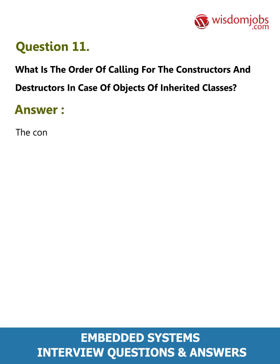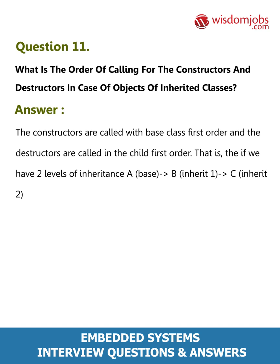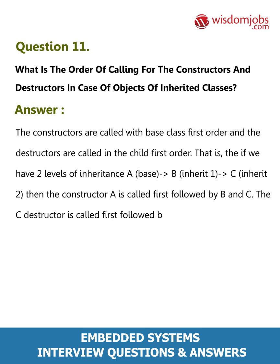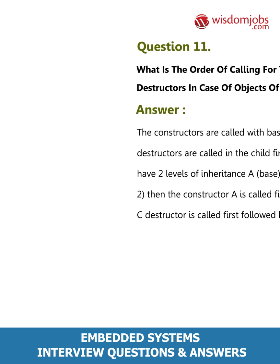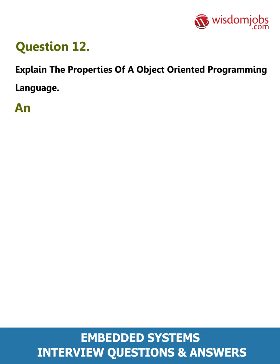Question 11: What is the order of calling constructors and destructors for objects of inherited classes? Answer: Constructors are called in base-class-first order, and destructors are called in child-class-first order. For example, with two levels of inheritance A→B→C: constructor A is called first, followed by B, then C. The destructor of C is called first, followed by B, then A.